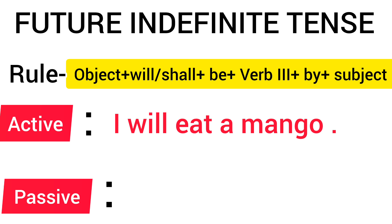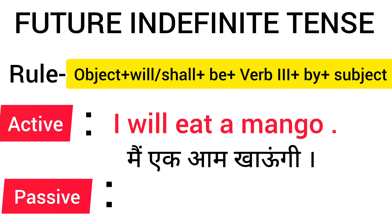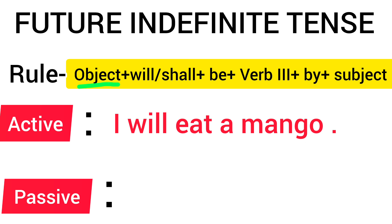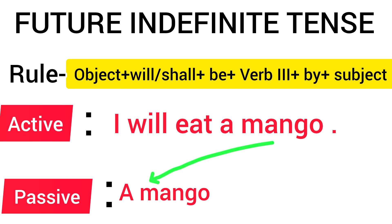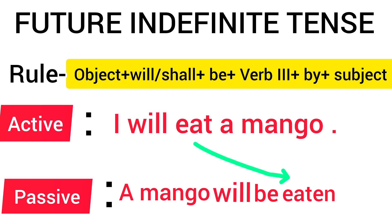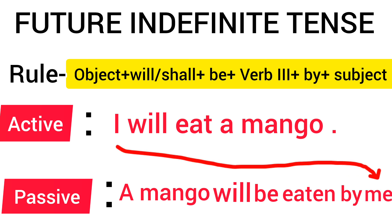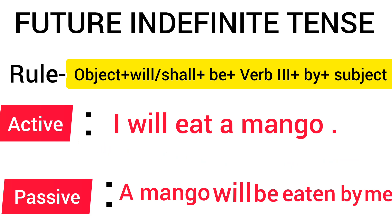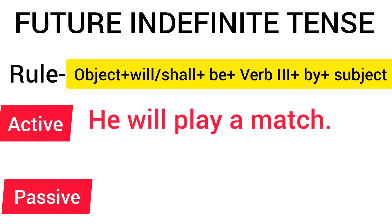I think you will understand properly. Our next sentence is: 'I will eat a mango.' So what is the object? A mango. We will write 'a mango', then we will write 'will', then 'a mango will', then we add 'be' — 'a mango will be' — and eat's third form is 'eaten'. So: 'A mango will be eaten.' Then we write 'by', and when the subject becomes the object, 'I' becomes 'me'. So: 'A mango will be eaten by me.'